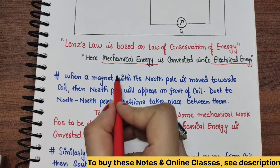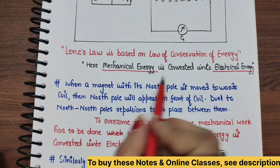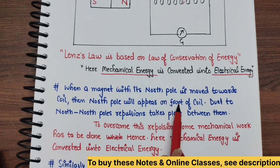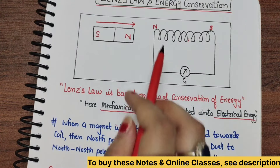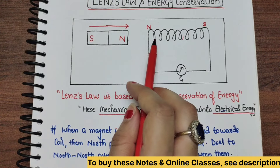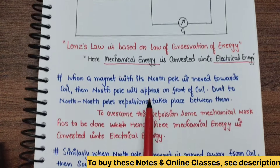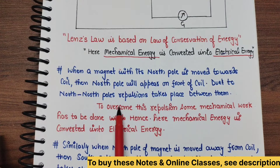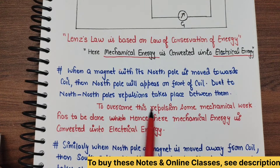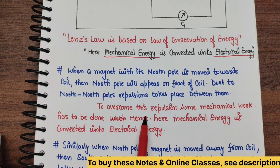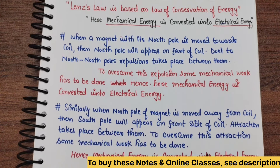When a magnet with its north pole is moved towards the coil, the north pole will appear on the front face of the coil. Due to north-north repulsion, you need to do mechanical work to overcome it. Therefore, the mechanical energy is converted into electrical energy.